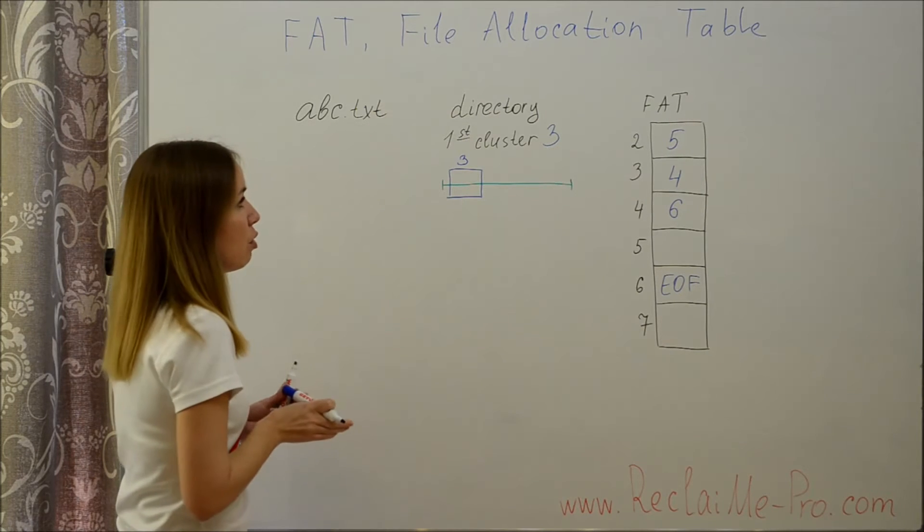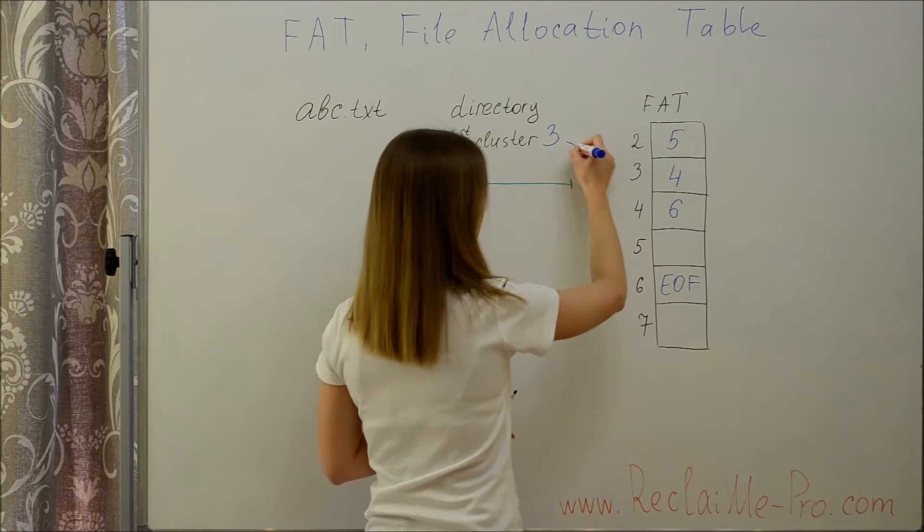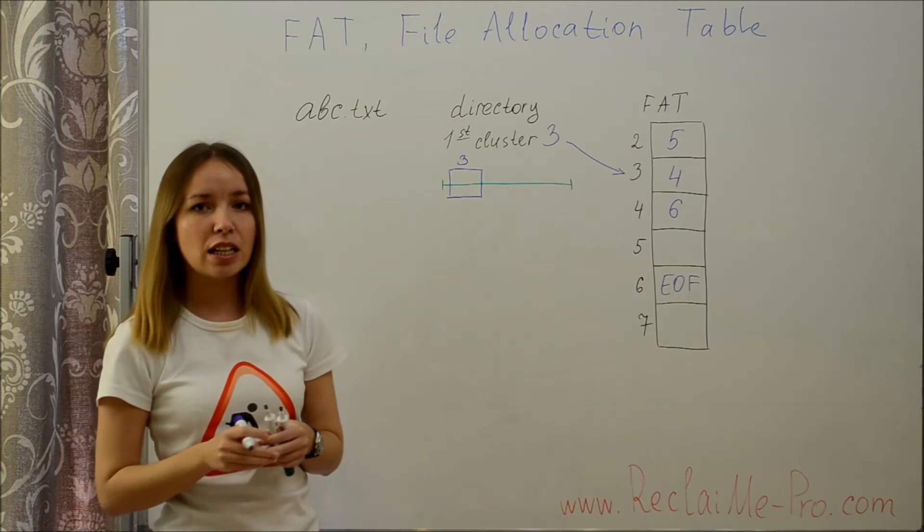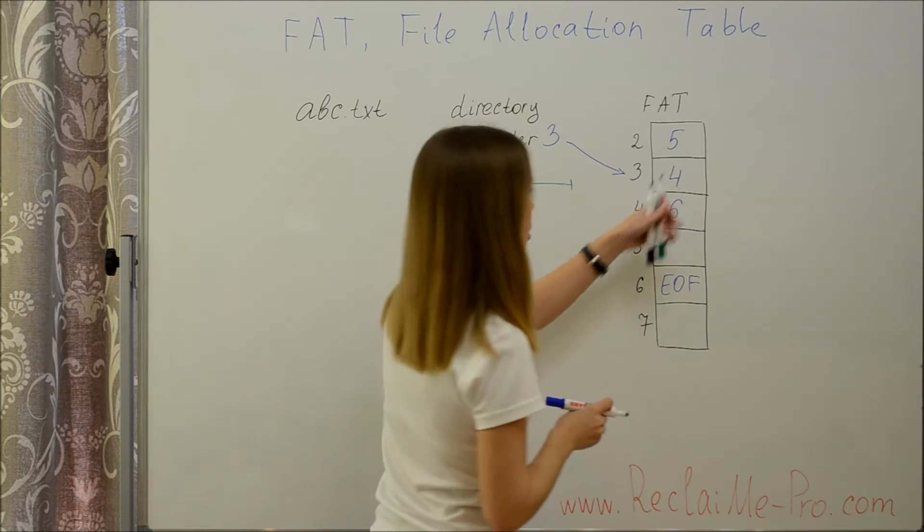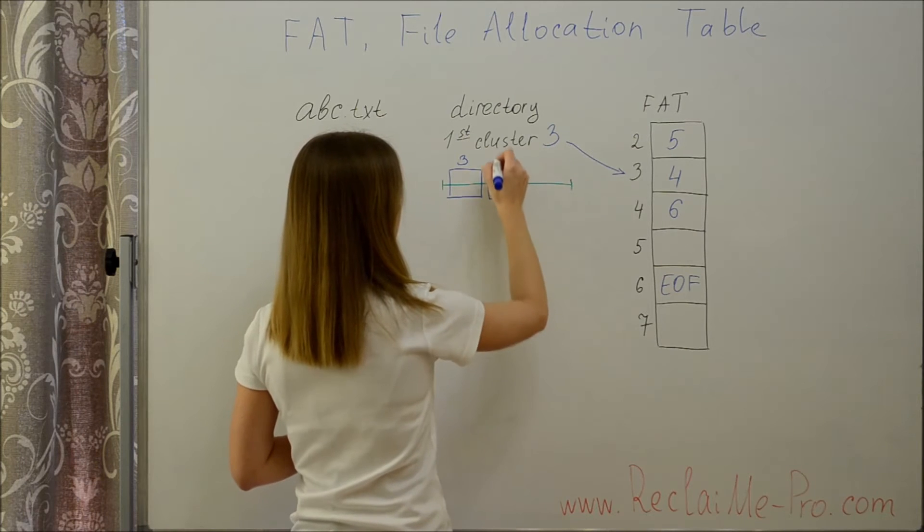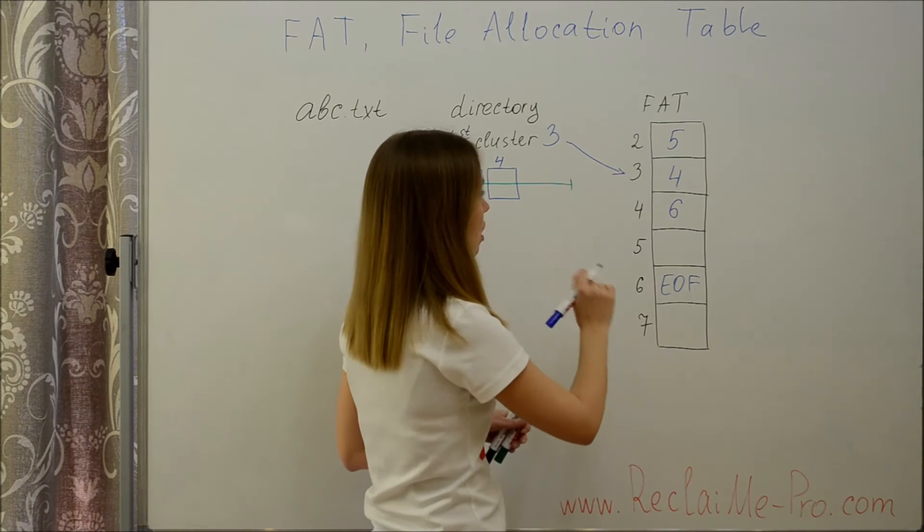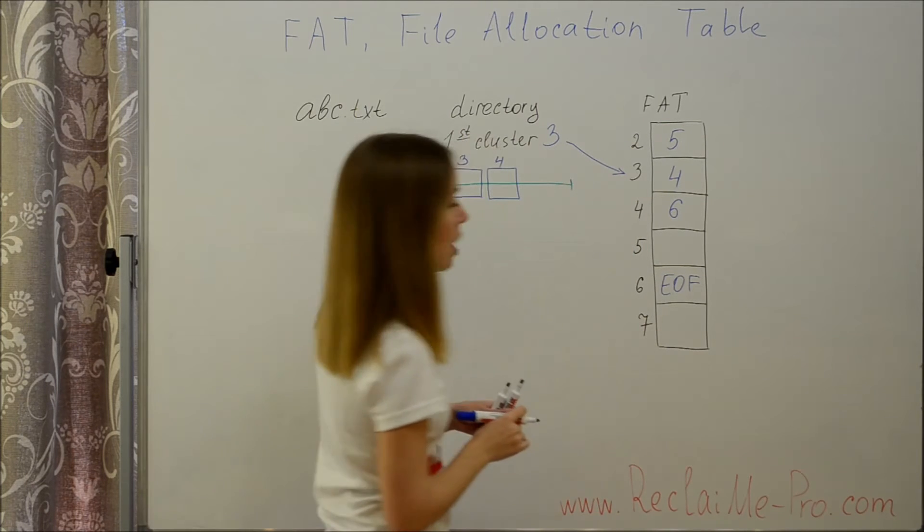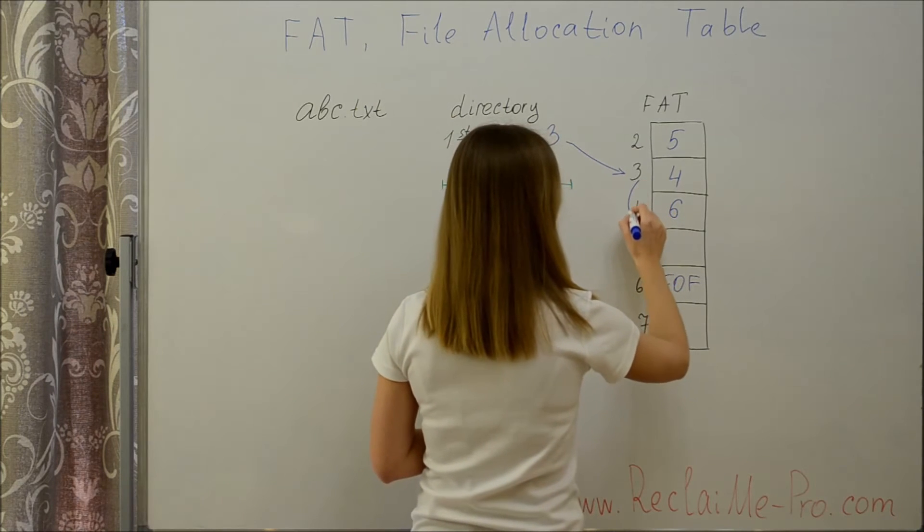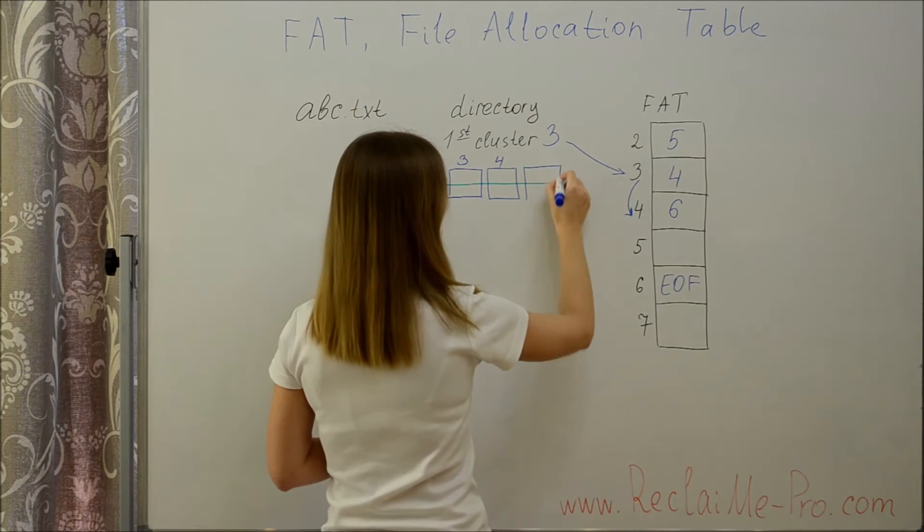Then a file system goes to element 3 of a table and finds out that the next part of the file is stored in cluster 4. Reads cluster 4. Fourth element says that the next part of the file is stored in cluster 6. A file system reads cluster 6.